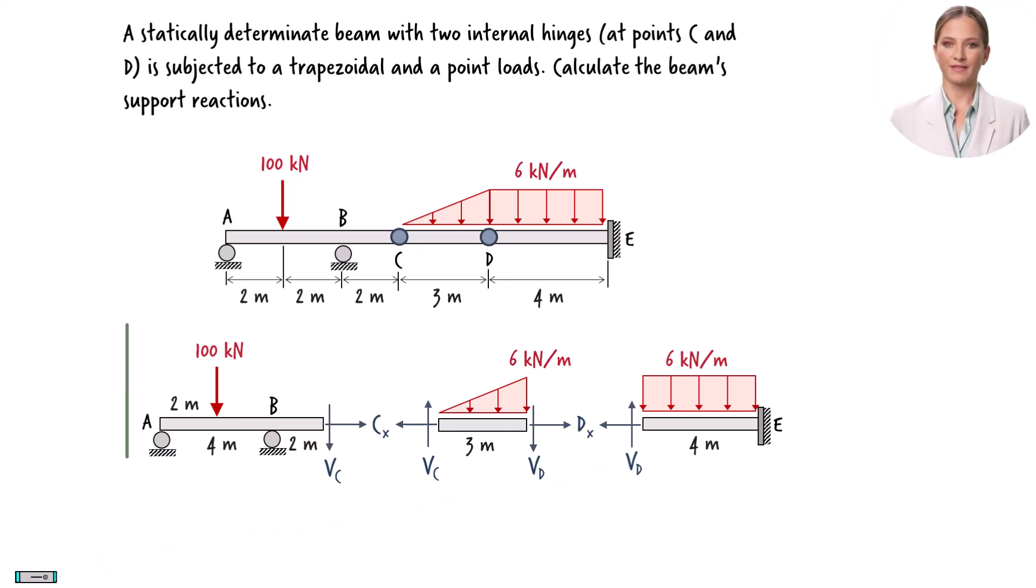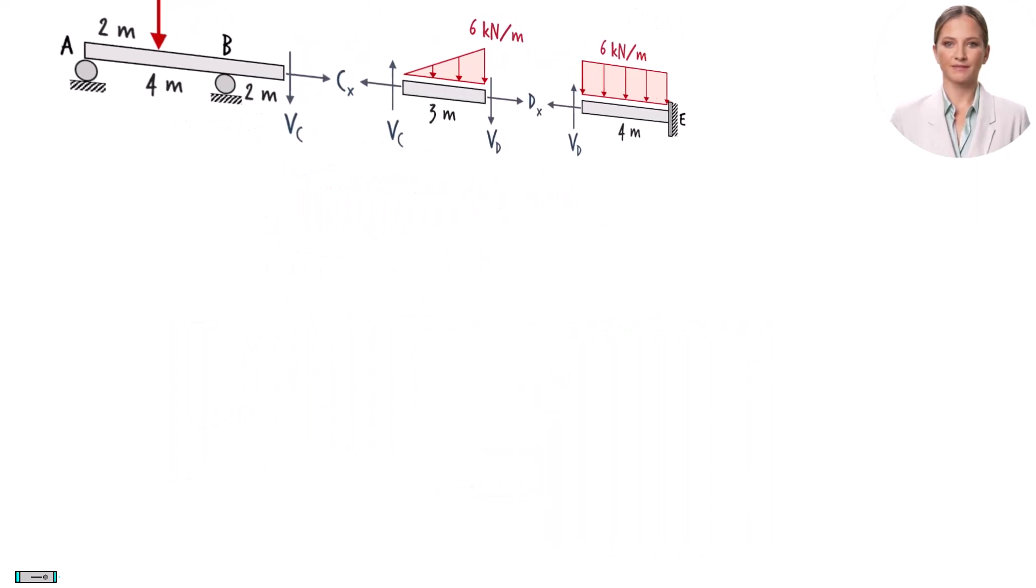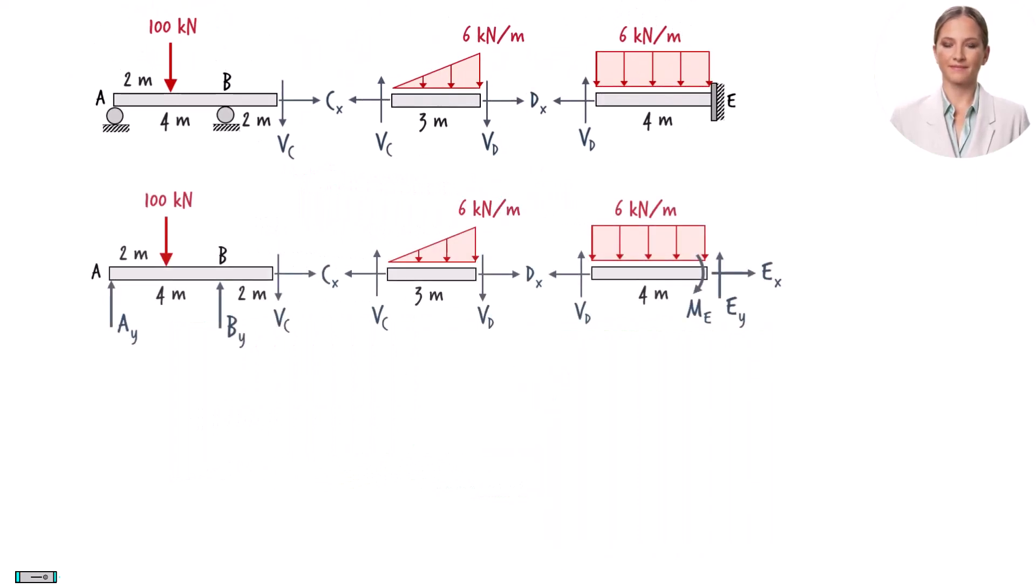This represents a partial free body diagram of the beam. To complete the diagram, we need to show the support reaction forces. Each roller support has one vertical reaction force. The fixed support has three reaction forces.